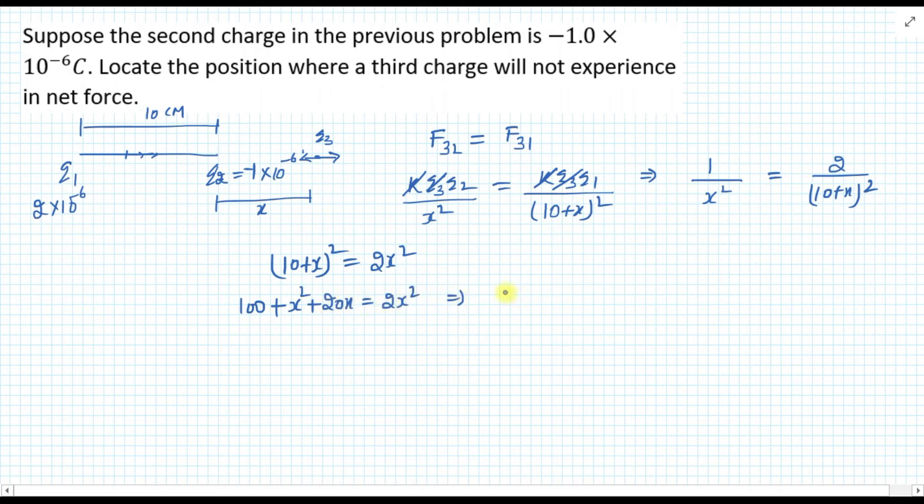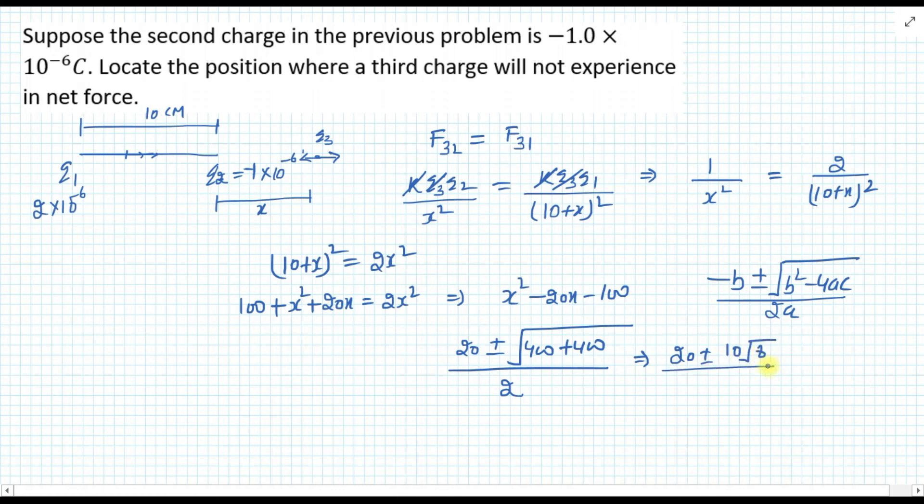Further it will become x square minus 20x minus 100. So to solve this quadratic, I can use formula minus b plus minus root b square minus 4ac upon 2a. So if I fill the value, this b is minus 20, so this will become plus 20 plus minus under root b square is 400 and minus 4ac is plus 400 upon 2a is 2. So this will become 20 plus minus 10 root 8 upon 2, or I can say 10 plus minus 10 root 2.